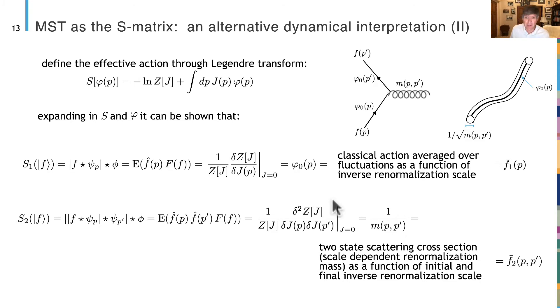Since we're going to be interested in the probability, we have just chosen a gauge such that phi of p equals zero, giving the form that Stefan came up with. But subsequent work that Stefan has done has recognized that there is also information in the gauge of the field that you're dealing with that can be useful. We define an effective action through a Legendre transform, expand S and phi as is normally done. And you can then show that the first order transformation is just the classical action averaged over fluctuations as a function of the inverse renormalization scale. And the second order transformation is the two state scattering cross section that is the scale dependent renormalization mass as a function of initial and final inverse renormalization scale or wave number.